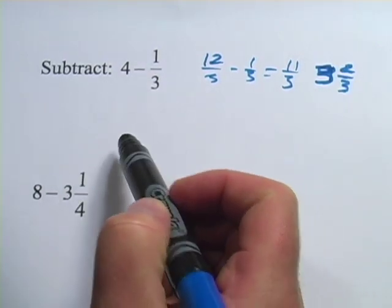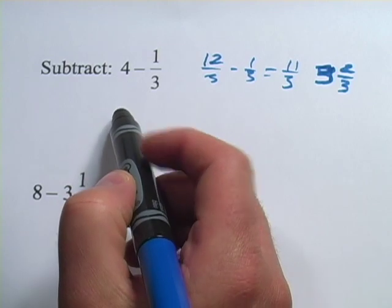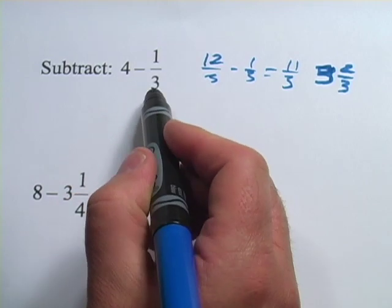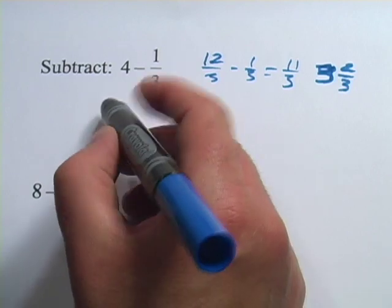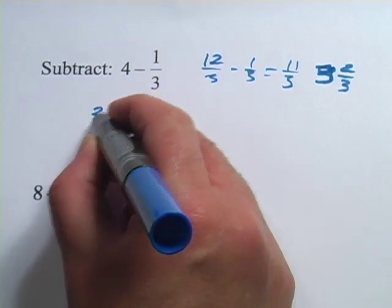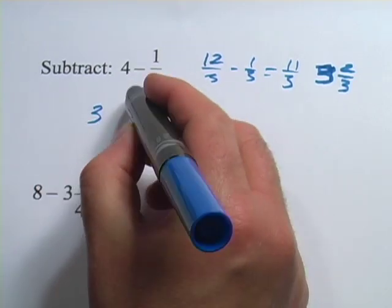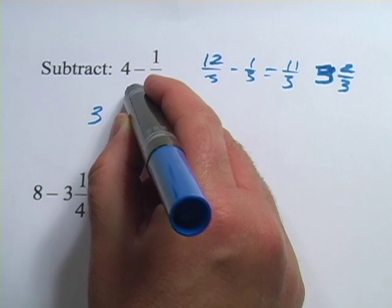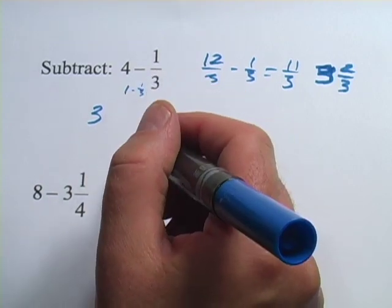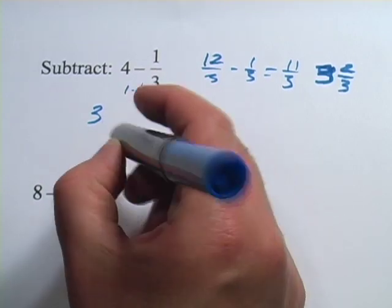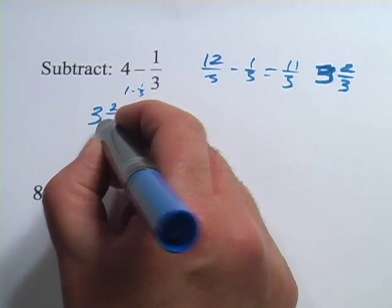The other way you could do this is say, okay, I've got this whole number 4, and I've got this fraction. This fraction is less than 1, so I know it's going to be 3 and something. So I just put the 3 down here, and what I've got left is 1 minus 1 third. Well, if I take away 1 third from a whole, I would have 2 thirds left.